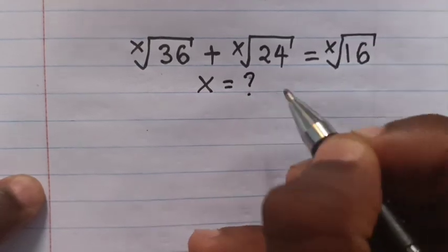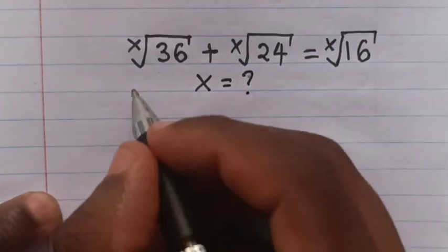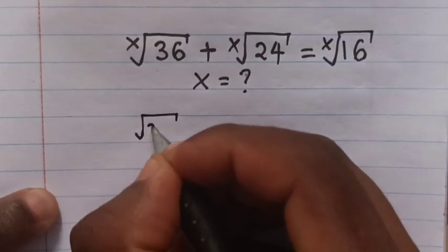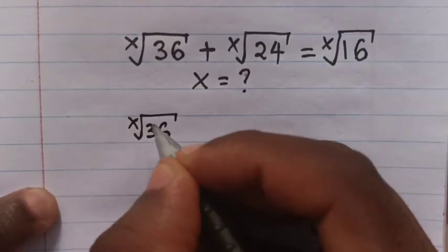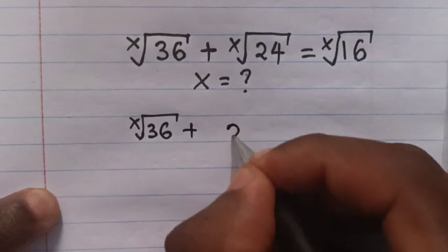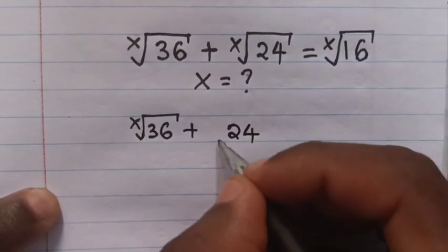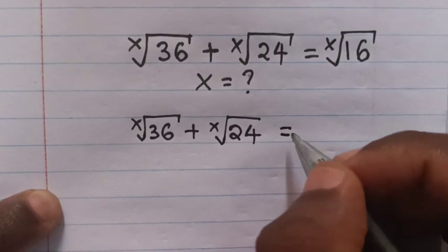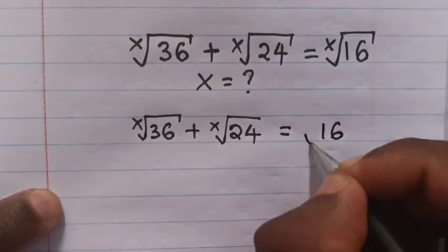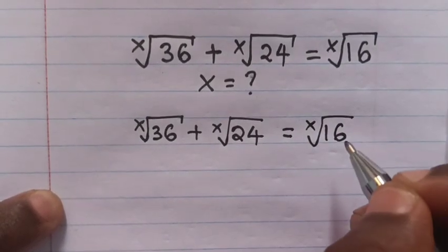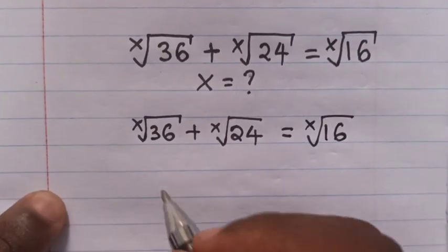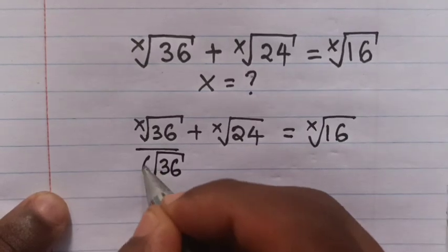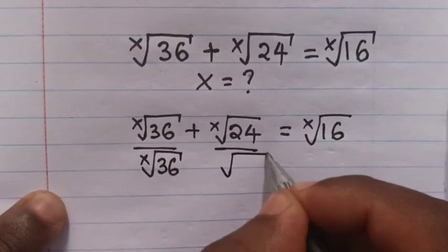To solve for x from 36 root of x plus 24 root of x equals 16 root of x, the next step is we divide by 36 root of x on both sides.